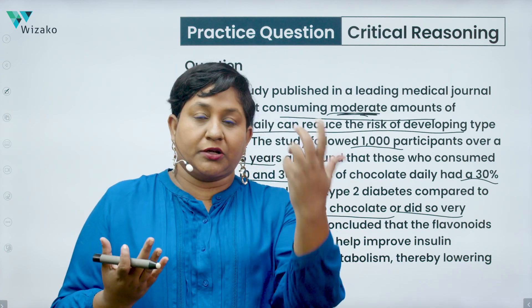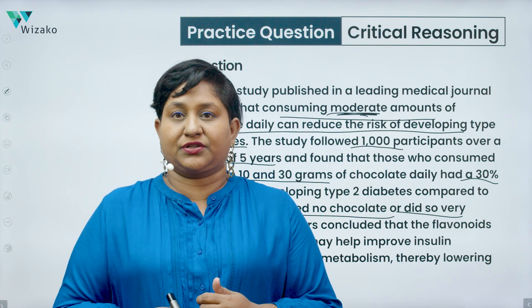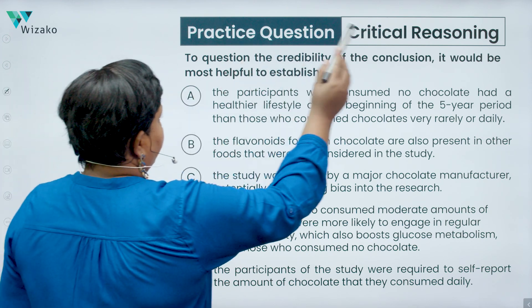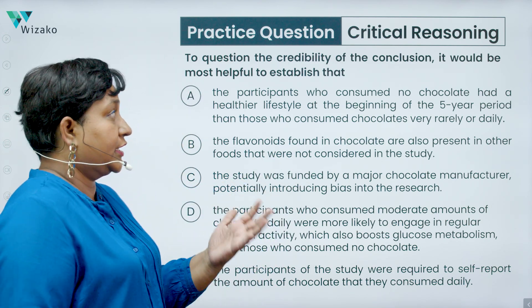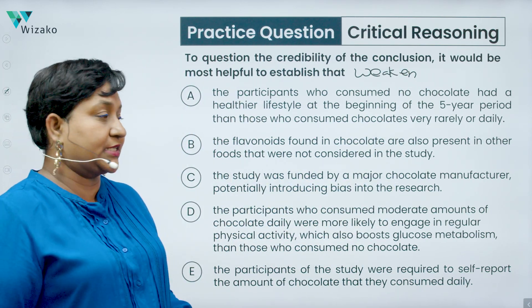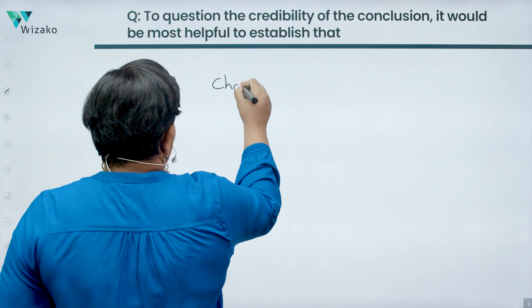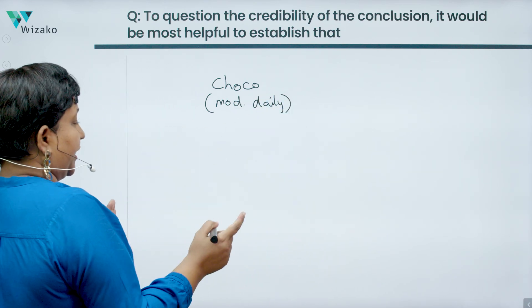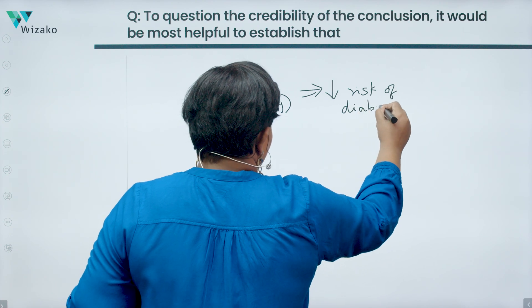So you understand the overall argument: two groups — one that consumed chocolate and one that didn't — and we identify that the group consuming chocolate had a 30% lower risk of diabetes, which is where the conclusion comes from. The question asks you to question the credibility of the conclusion, meaning you need to weaken the argument. The conclusion is: if you consume a moderate amount of chocolate daily — between 10 and 30 grams — that leads to a decrease in the risk of diabetes.